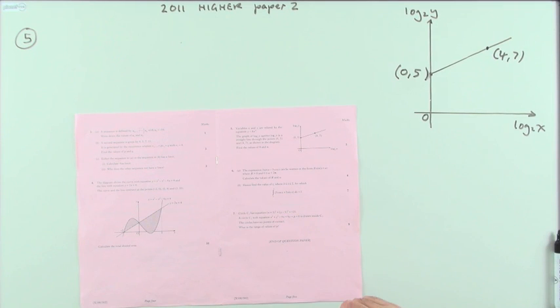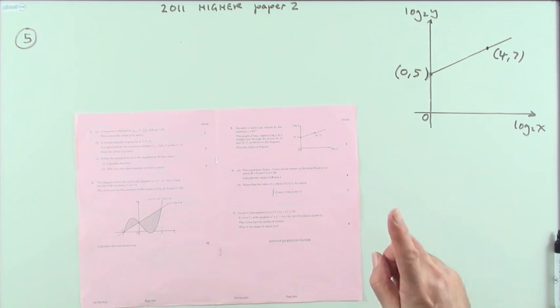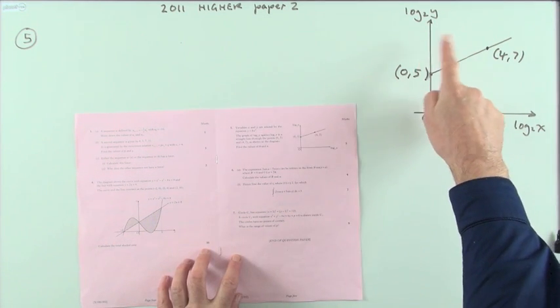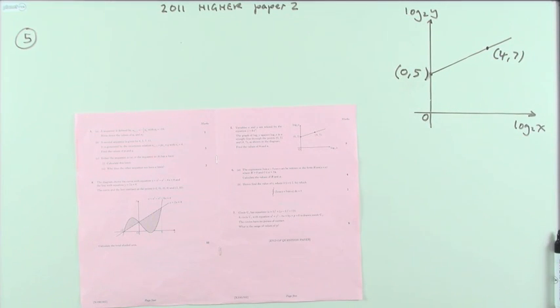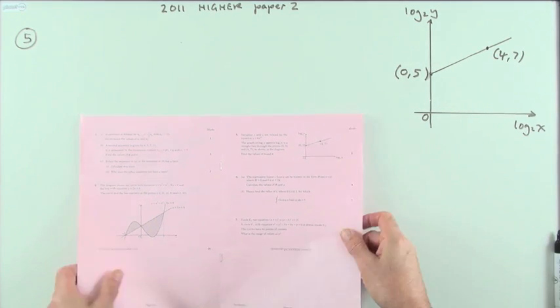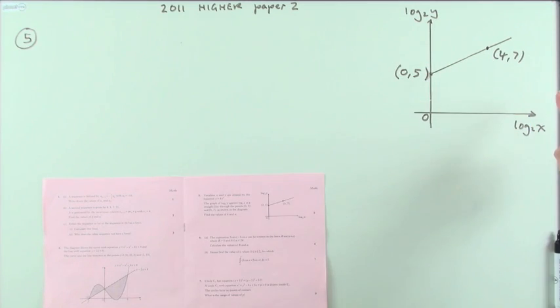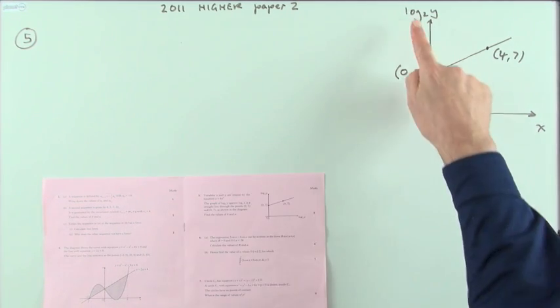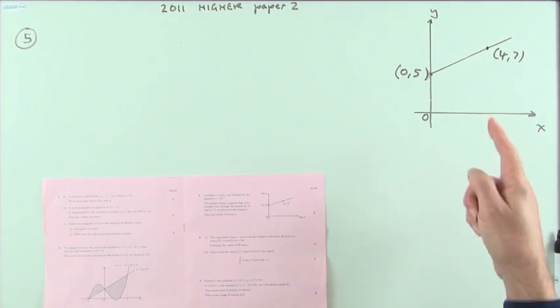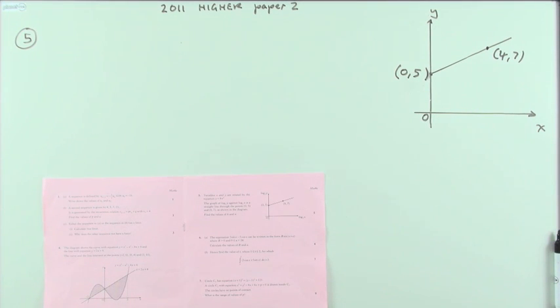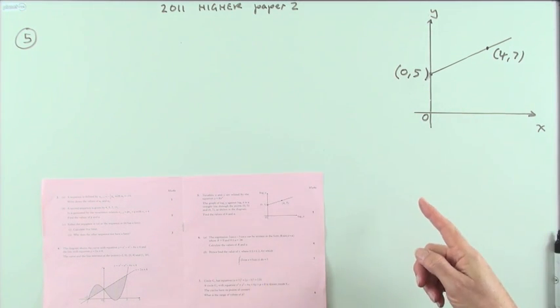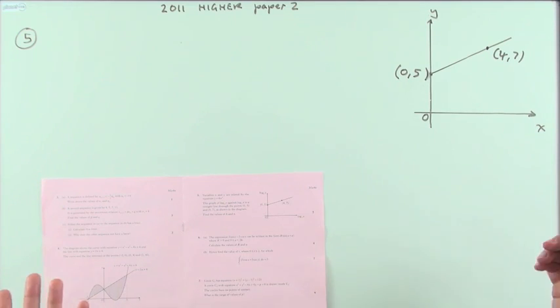So number five from the 2011 Higher paper. A logs question, worse than that. Scary stuff, experimental data logs question. But why should that be the case? If you were to see that and all it said was y and x, and it said find the equation of that line, you would think five marks to find the equation of that line. Easy. And essentially it's the same thing.